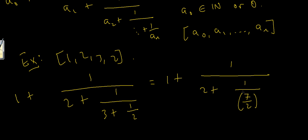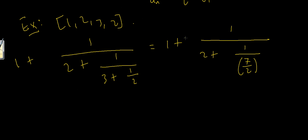But what's the reciprocal of a fraction? To find the reciprocal of a fraction you just invert it. You just swap the numerator and the denominator. So 7 over 2 becomes 2 over 7 when we have 1 over that. So this becomes 1 plus 1 over 2 plus 2 sevenths.